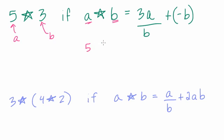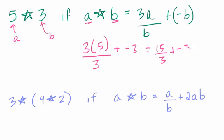So you get 3 times 5, because 5 is a, over b which is 3, plus negative 3. Not so bad. We have 15 over 3, which is 5, plus negative 3. So we get 5 plus negative 3, which is 2, our answer.